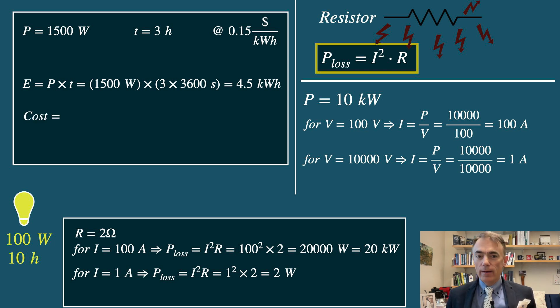For the cost, the cost is 4.5 kilowatt hours times 0.15 dollars per kilowatt hour, so that's 0.675 dollars. This shows how understanding energy consumption can help manage electricity costs effectively.